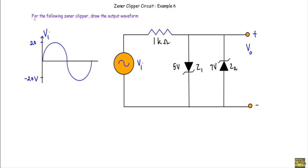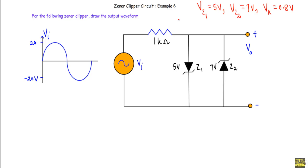In this video I will show you another example of a general clipper circuit. This is our given clipper circuit in which we are applying a sinusoidal voltage with positive maximum plus 20 and negative maximum minus 20 volt. We have Zener diodes Z1 and Z2 connected in parallel, and we are taking the output across this parallel connection. The Zener breakdown voltage Vz1 is equal to 5 volt, Vz2 is equal to 7 volt, and for convenience we will assume the built-in potential Vk is equal to 0.8 volt.